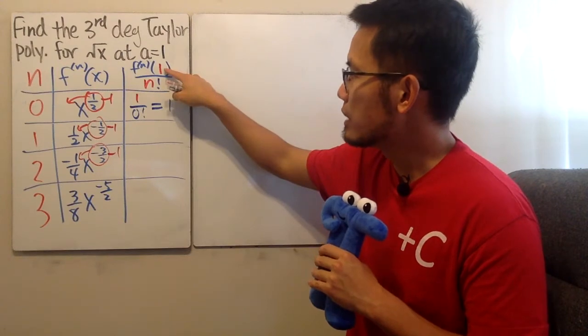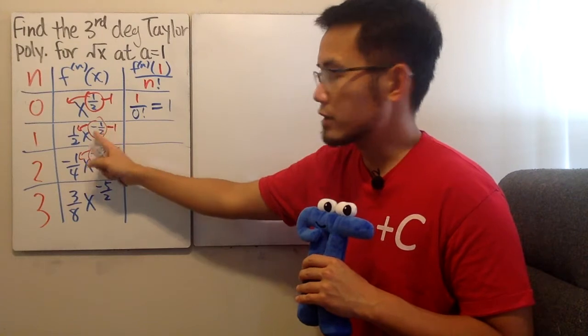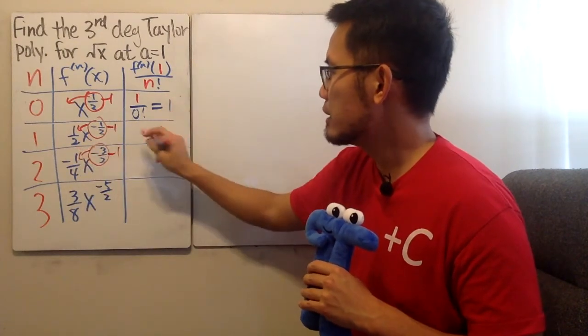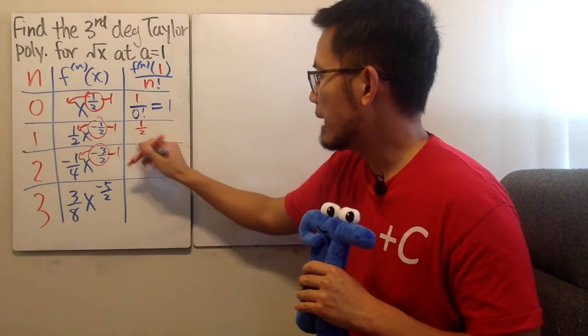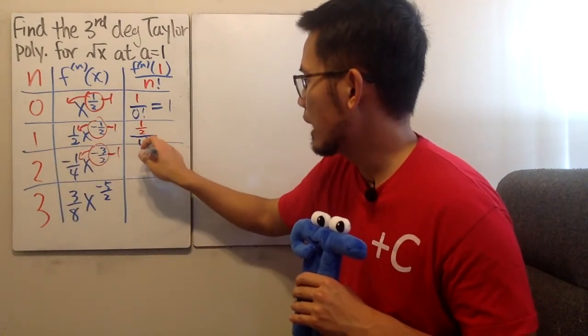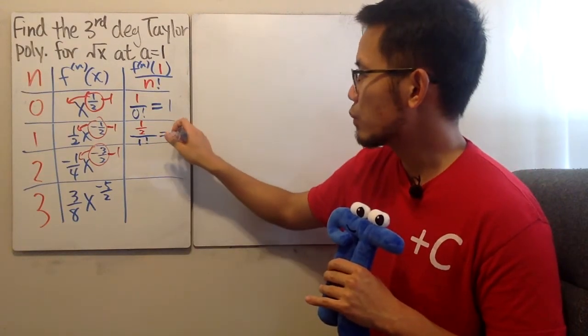Next, I'm going to put in the 1 in here. And based on this, this is just 1 to whatever. So it's still 1 times 1 half. So the top is 1 half. But don't forget to divide it by 1 factorial. For this one, it doesn't matter because 1 factorial is still just 1. So all in all, we end up with 1 half.